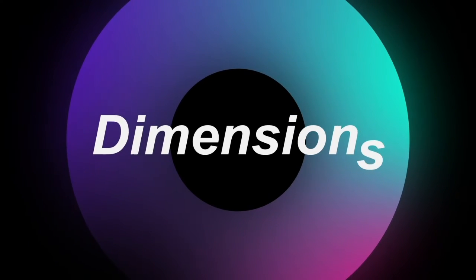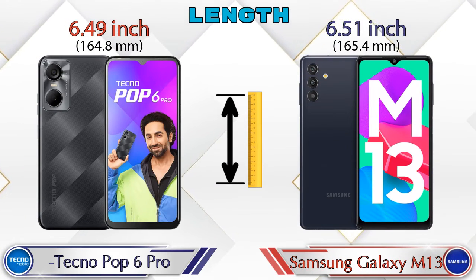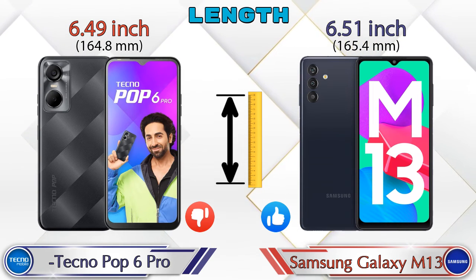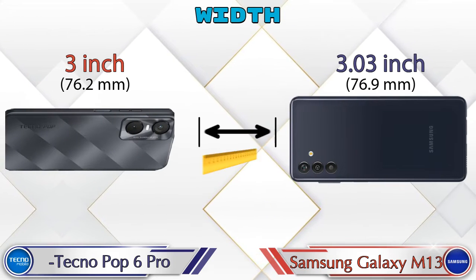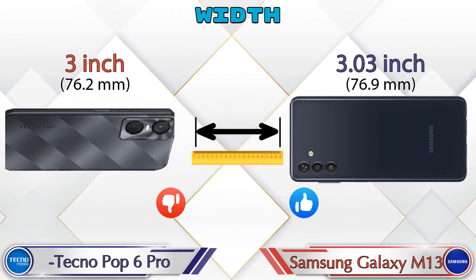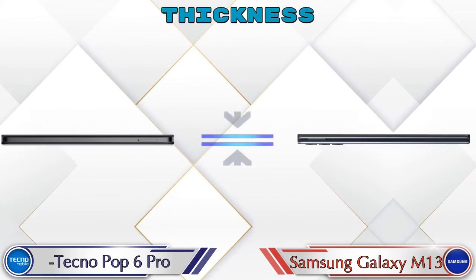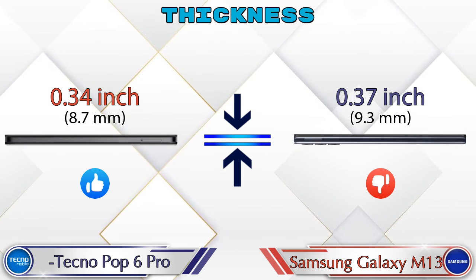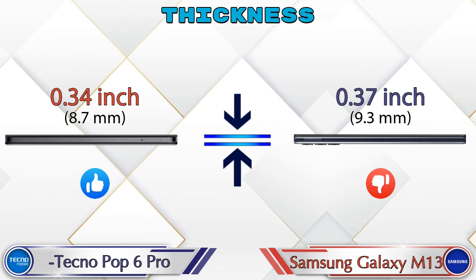Now we check the detail about dimensions. Length: Tecno Pouvoir 6 Pro is 6.49 inches and Galaxy M13 is 6.51 inches. Width: Tecno Pouvoir 6 Pro is 3 inches and Galaxy M13 is 3.03 inches. Thickness: Tecno Pouvoir 6 Pro is 0.34 inches and Galaxy M13 is 0.37 inches, which is thicker than the Tecno Pouvoir 6 Pro.